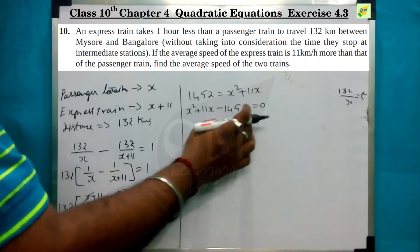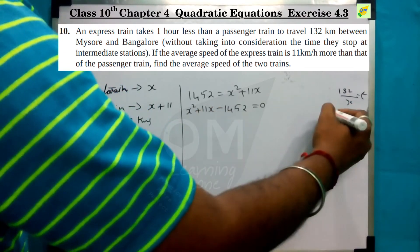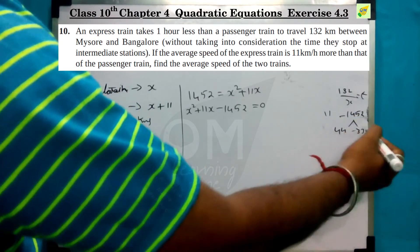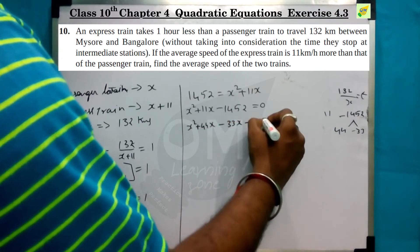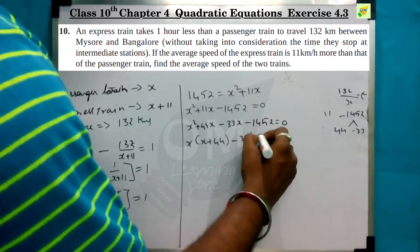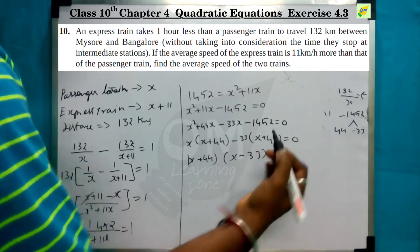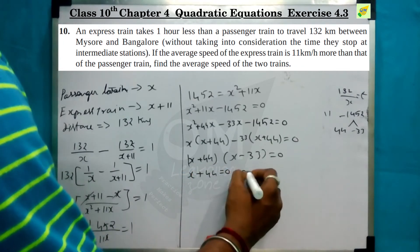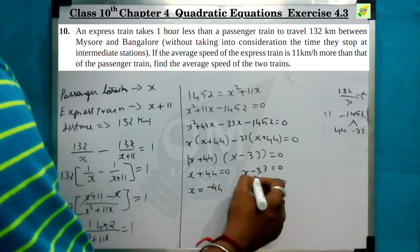So 1452 equals x squared plus 11x, giving us x squared plus 11x minus 1452 equals 0. Now we factorize: we get (x + 44)(x − 33) equals 0, so x equals minus 44 or x equals plus 33.